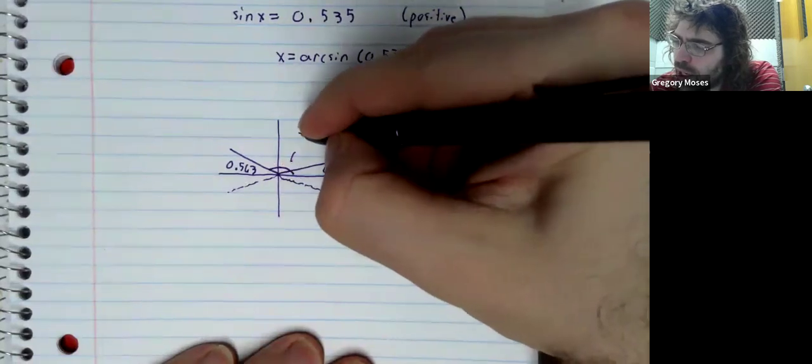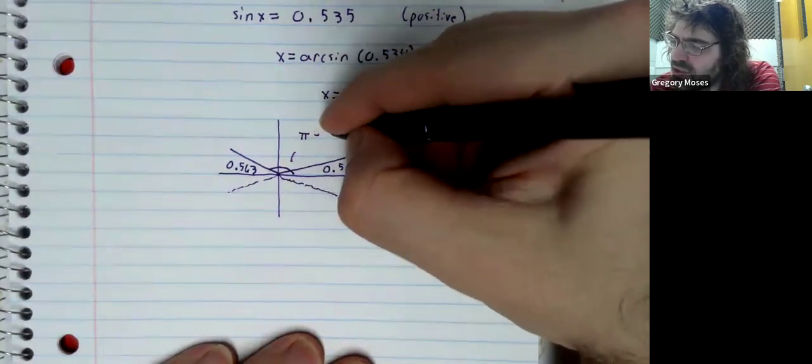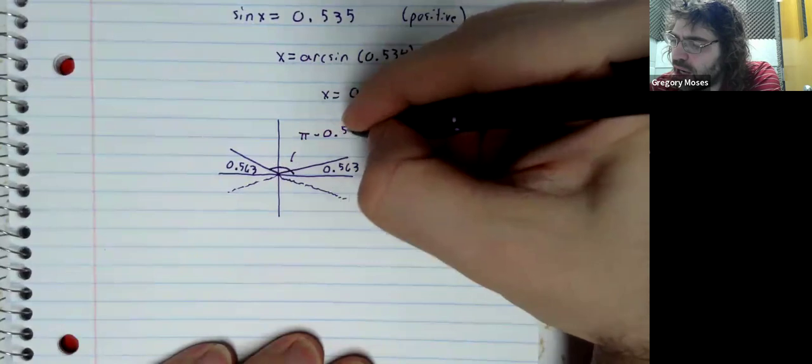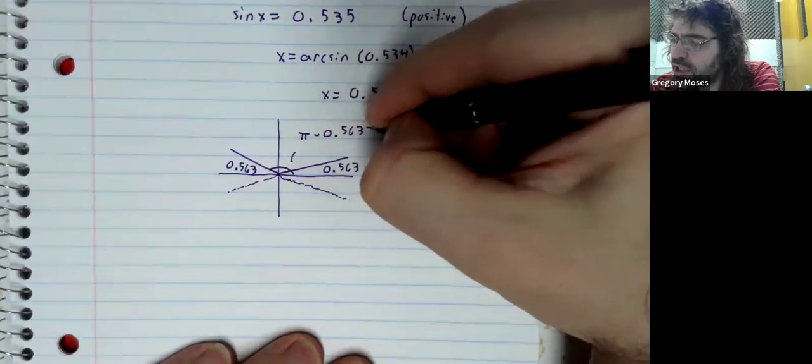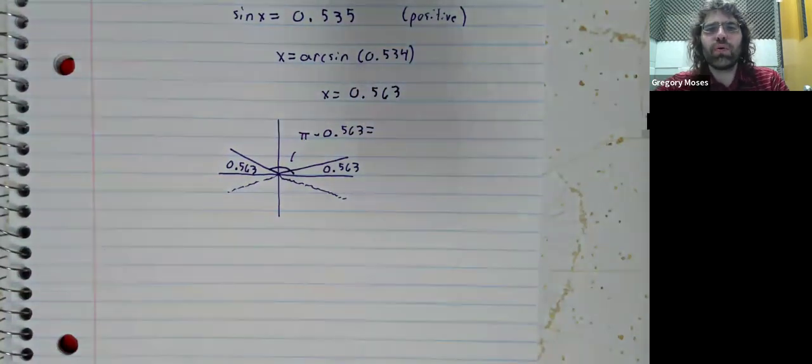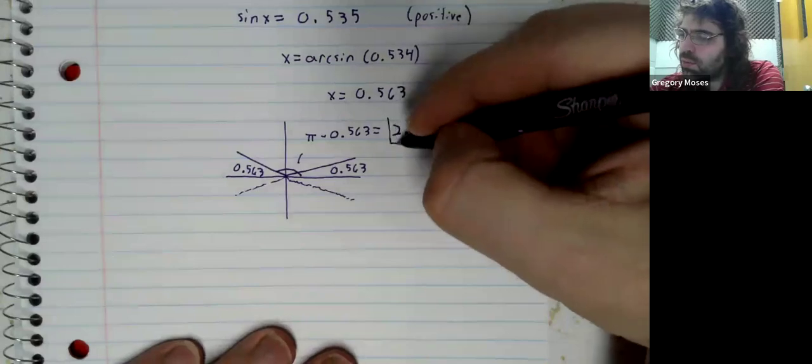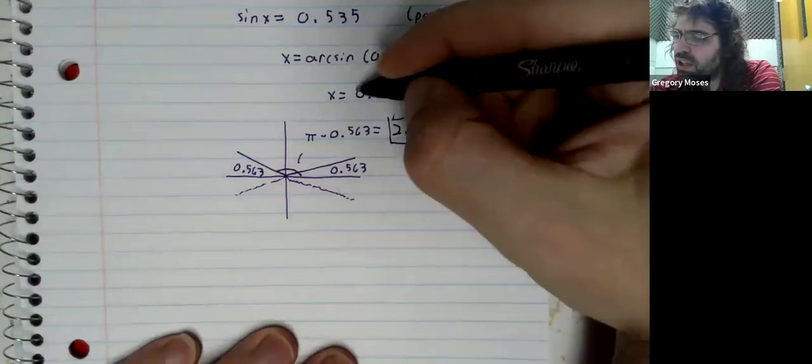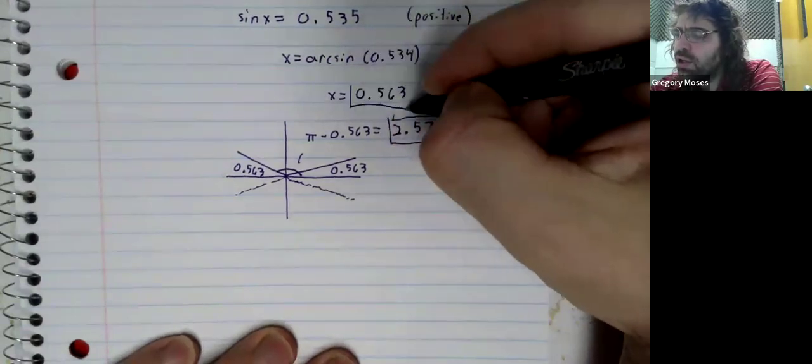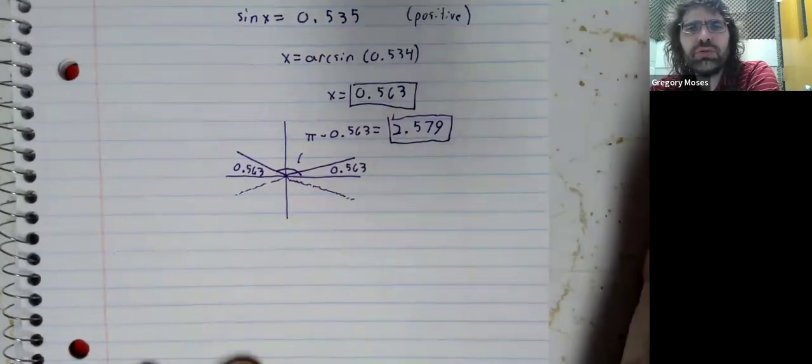So, pi minus 0.563 equals 2.579. We have two solutions,